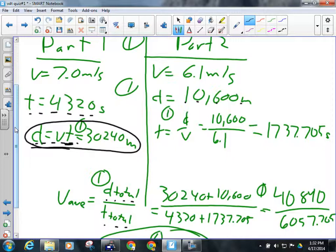Now I've got the distance for both parts, but I don't have the time for part two. I have the speed and I have the distance. So I've got to use those to get t. So again, v equals d over t, and when I manipulate that for t, I multiply both sides by t, and then I divide both sides by v, and I get t equals d over v. So give them a mark if they have t equals d over v. 10,000 over 6.1 gives us 1,737.705 seconds.